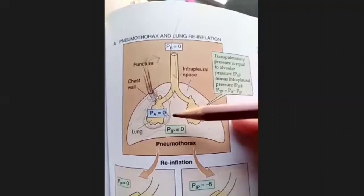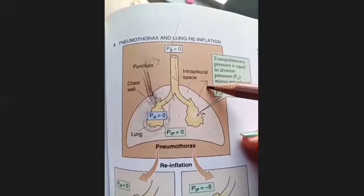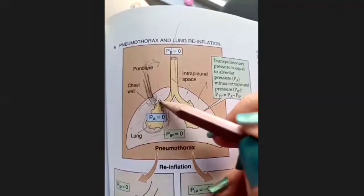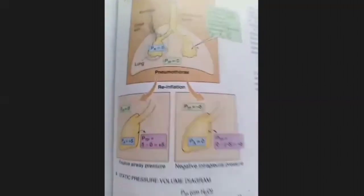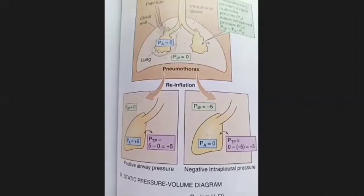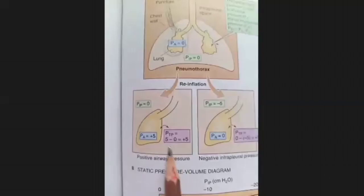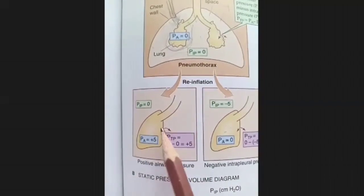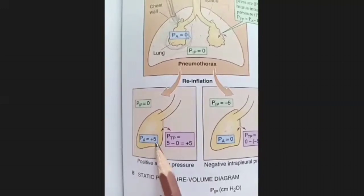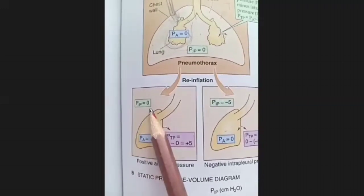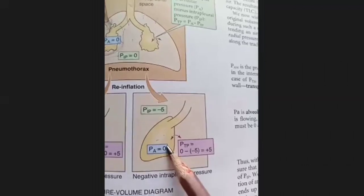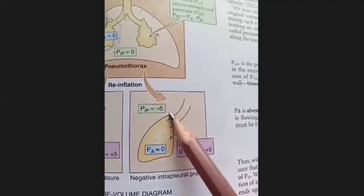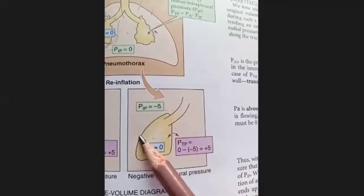Naturally, we change transmural pressure the other way — by expanding the chest, we create negative pressure, which increases transmural pressure and expands the lungs. The ventilator does the opposite. So to understand: positive airway pressure can also expand the lung by increasing transpulmonary pressure. If we increase alveolar pressure to plus five, even if intrapleural pressure is not negative, the lung will still expand. And if we make intrapleural pressure negative without changing alveolar pressure, the lung will return to its size and expand.